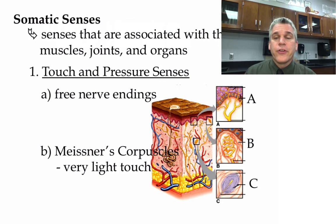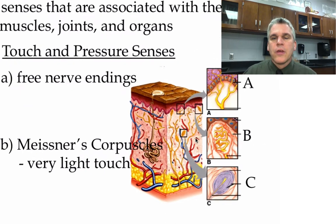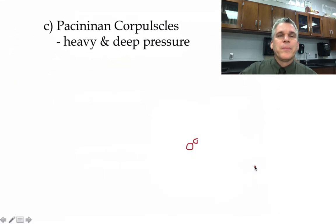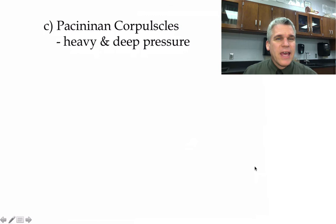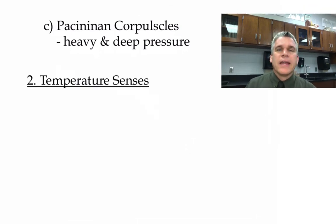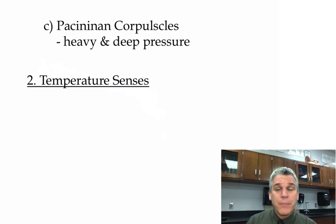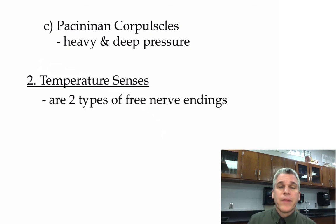The third type, shown on the next slide, are found deeper in the dermis. They're also rounded in shape and are called the Pacinian corpuscles — these detect heavy or deep pressure. Some of these free nerve endings are also measuring temperature, so we have some temperature senses as well.